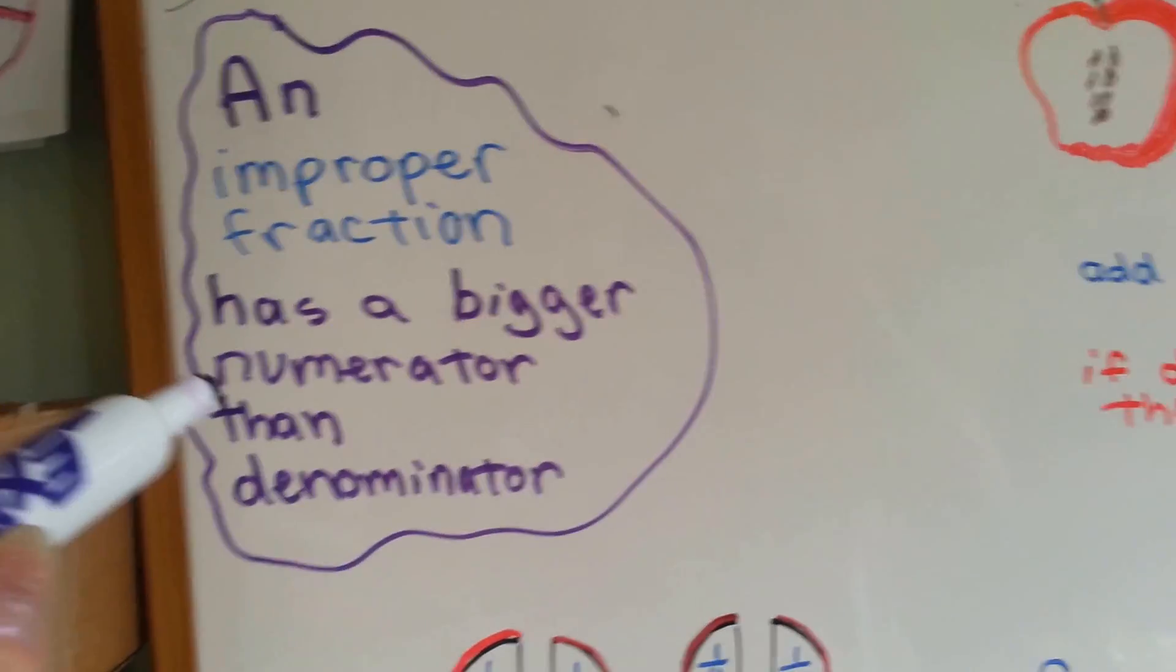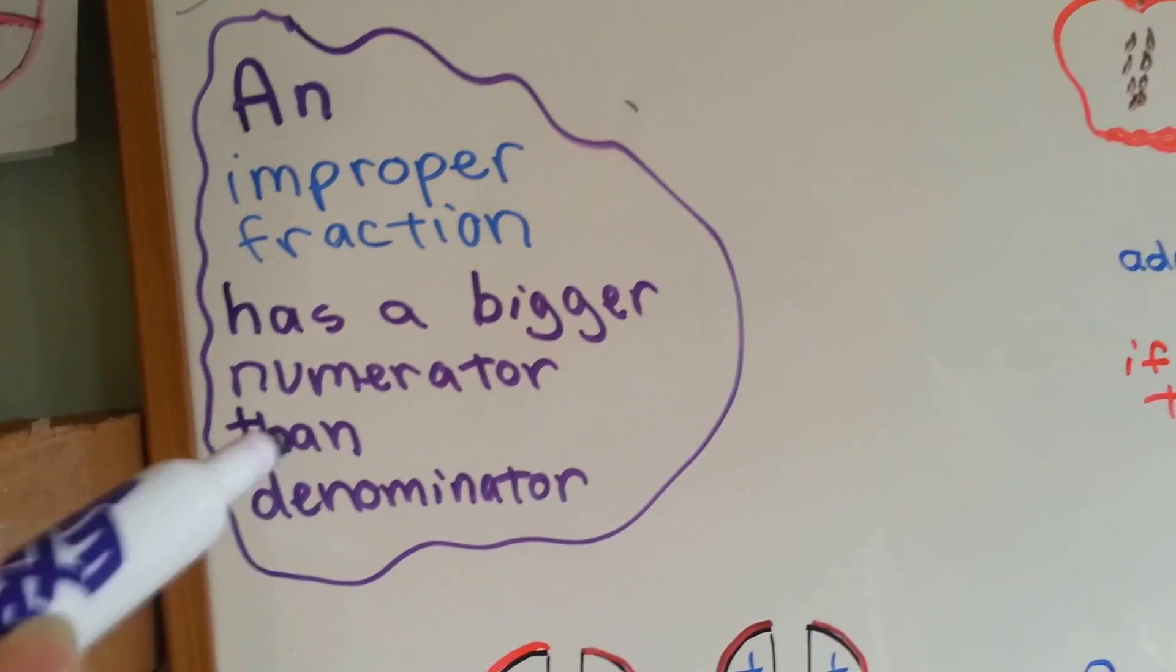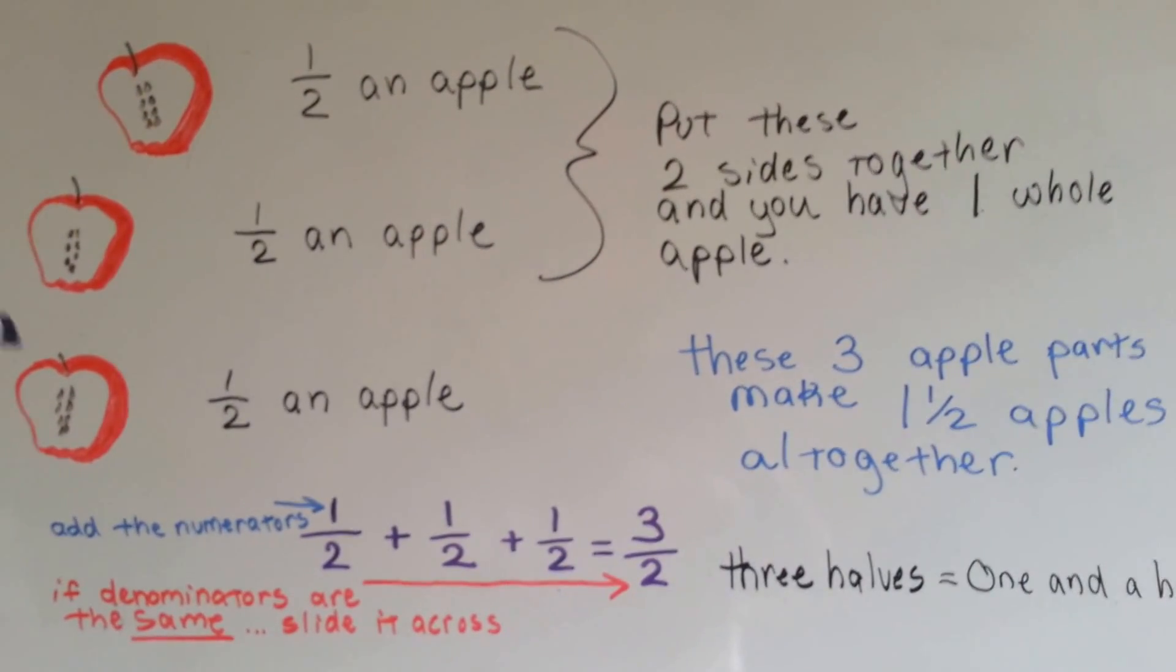So, an improper fraction has a bigger numerator than denominator. The top part is bigger than the bottom part. Look at my drawing here. I have a half of an apple, a half of an apple, and a half of an apple.